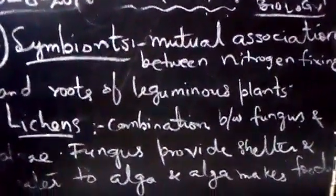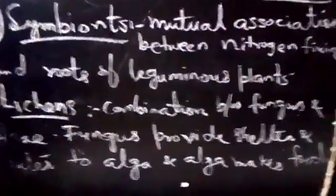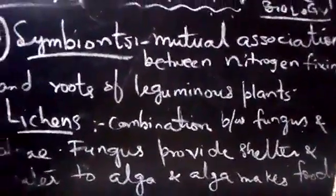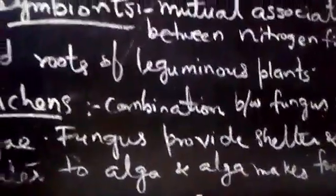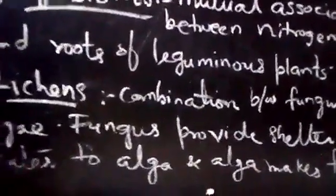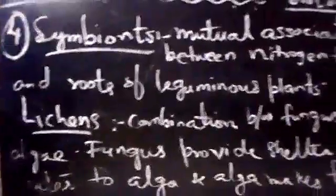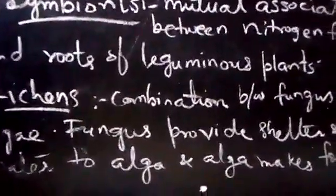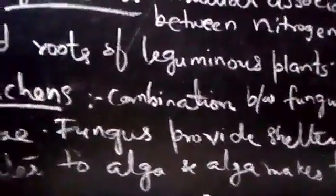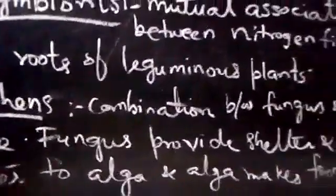Lichens are a combination of fungus and algae. Fungus provides shelter to algae, as fungi are larger in size. They give shelter to algae.